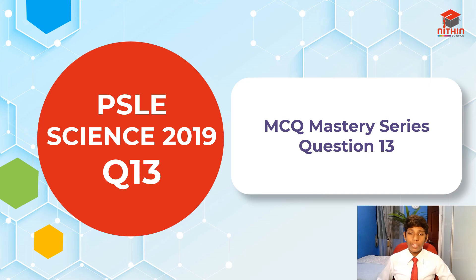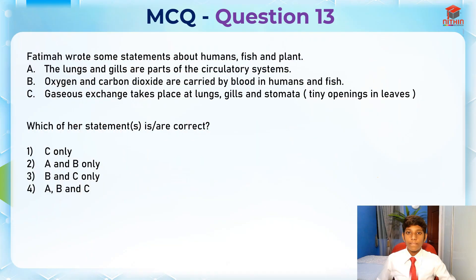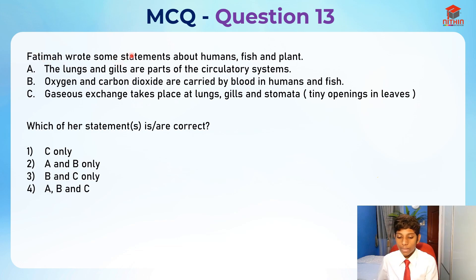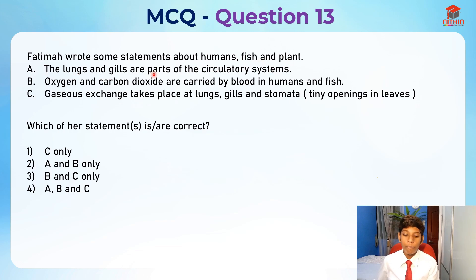Okay, so today I'll be going through question 13, so let's take a look at the question first. Fatima wrote some statements about humans, fish and plants. Statement one: the lungs and gills are parts of the circulatory systems.